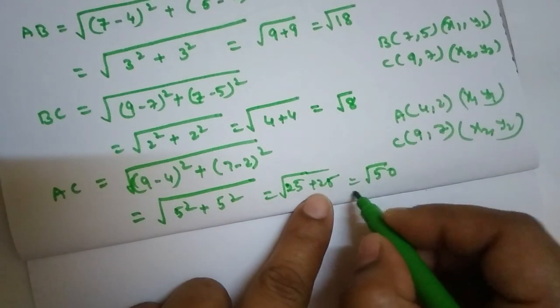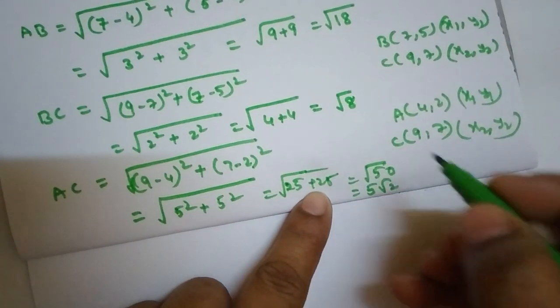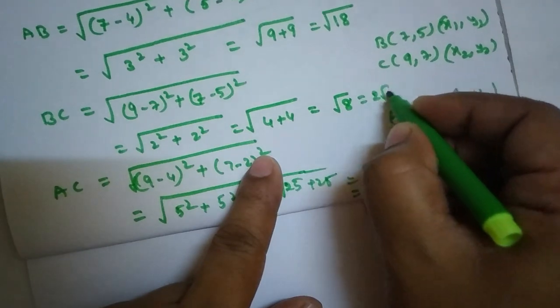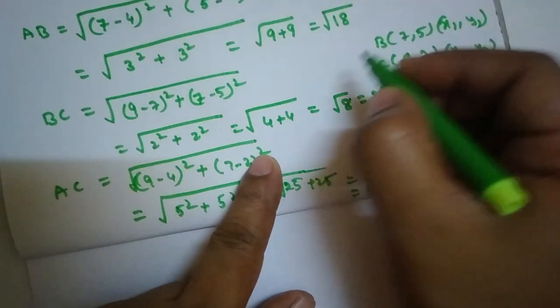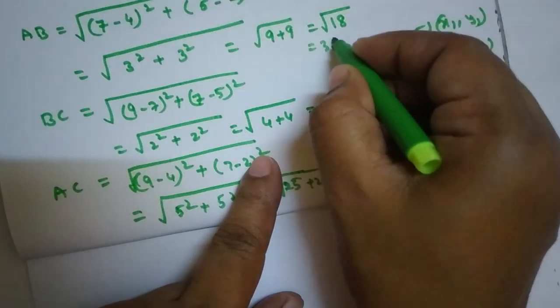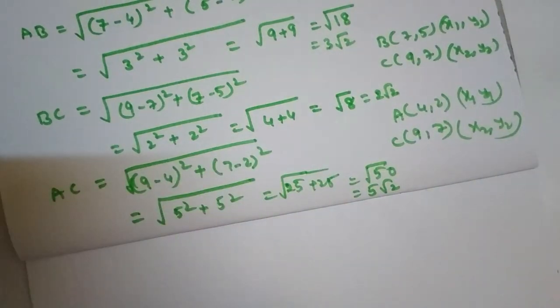Root 50 we write as 5 root 2, and root 8 we write as 2 root 2, and root 18 we write as 3 root 2.